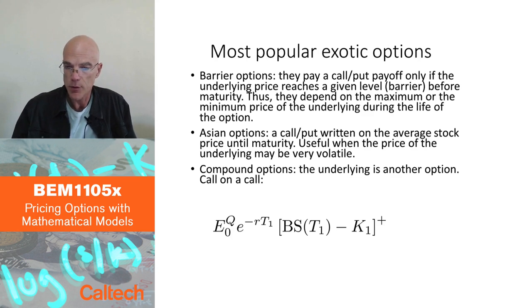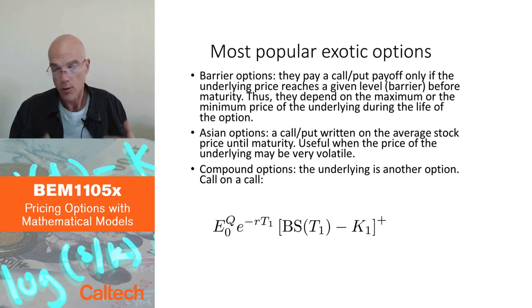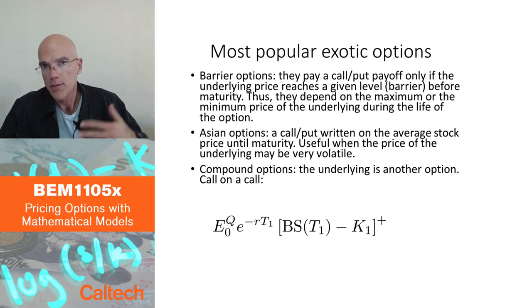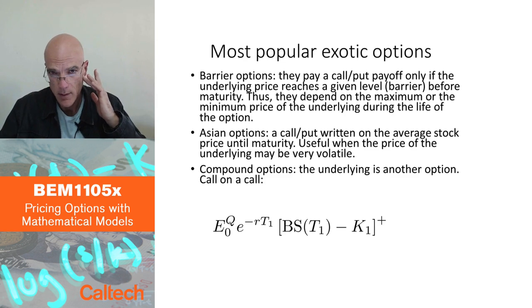Mathematically, you have to know the joint distribution, joint probability distribution of the stock price, let's say it's an option on stock, and the maximum or the minimum of the stock price, which translates into knowing the joint distribution for Brownian motion or Brownian motion with drift and the maximum or the minimum of that Brownian motion with drift. This joint distribution is actually known, and there are, in fact, explicit formulas you can actually compute. If you integrate against that joint distribution the payoff of the barrier option, you can actually compute the price in the Black-Scholes-Merton model.